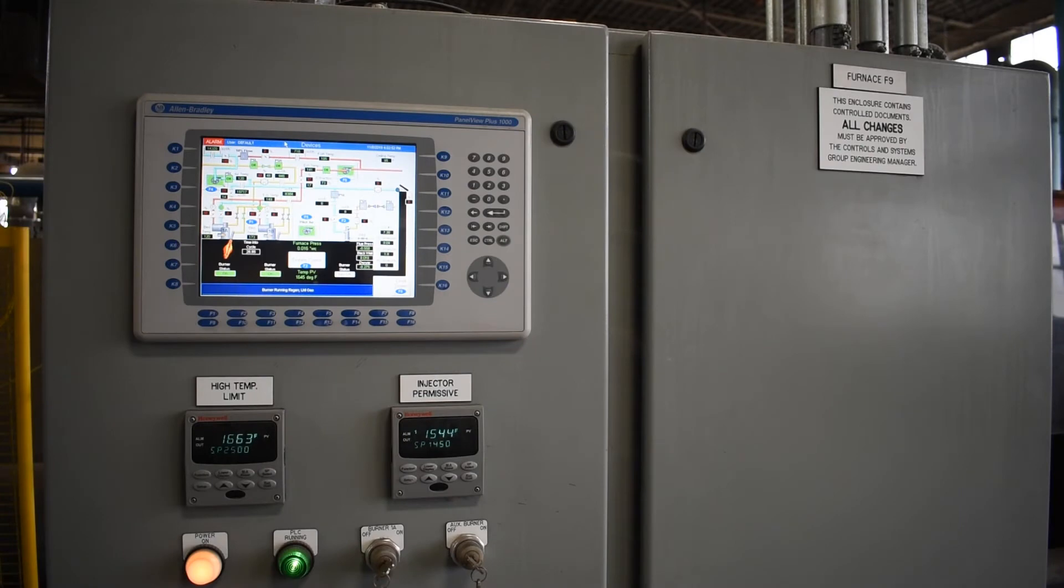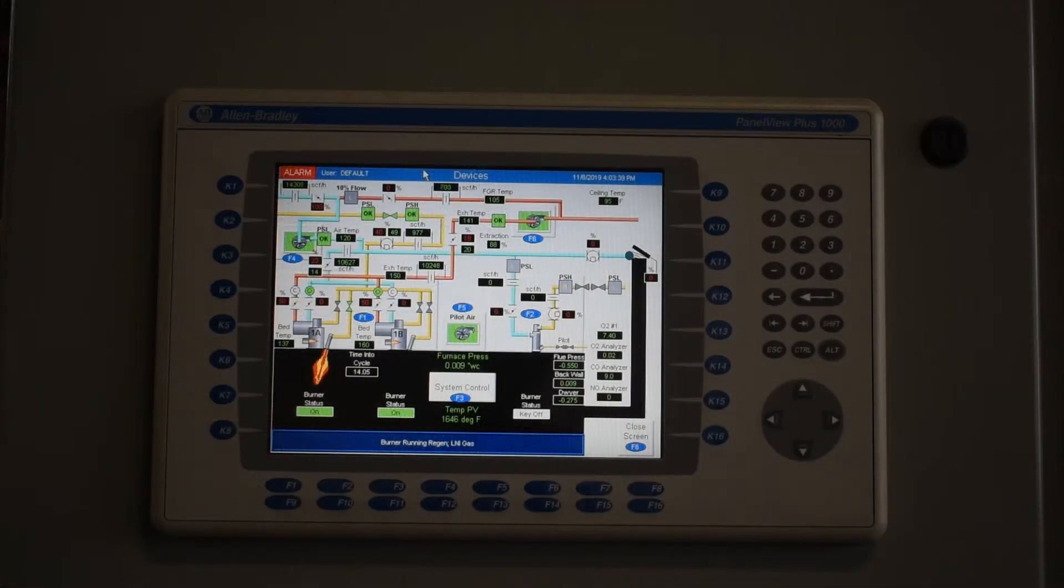This combustion system uses a programmable logic controller or PLC, which meters the air and fuel flow and the cycles of the burners. It allows for easy debugging of issues through alarm enunciations, which help to pinpoint any problems should they arise.